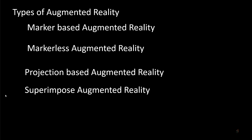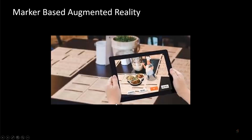There are four types of augmented reality: marker-based augmented reality, marker-less augmented reality, projection-based augmented reality, and superimposed augmented reality.